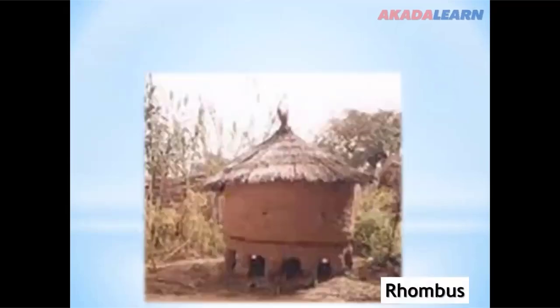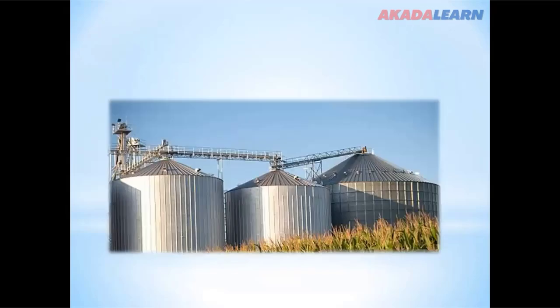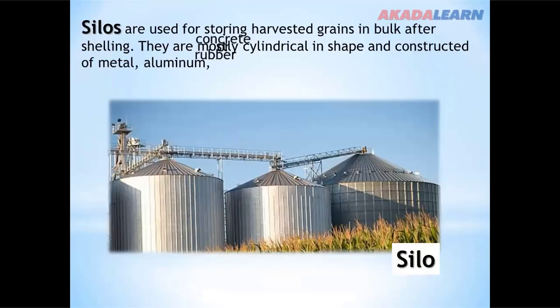We have the rhombos. Rhombos are used for storing grains and are made of mud with a hard roof. We also have silos. Silos are used for storing harvested grains in bulk after shelling. They are mostly cylindrical in shape and constructed of metal, aluminium, rubber or concrete.